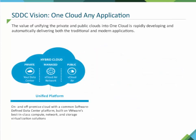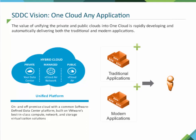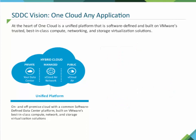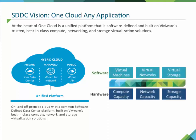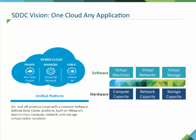The value of unifying your private and public clouds into one cloud is rapidly developing and automatically delivering both your traditional and modern applications. At the heart of one cloud — the secret sauce — is a unified platform that is software-defined and built on VMware's trusted best-in-class compute, networking, and storage virtualization solutions. This unified platform also offers intrinsic security: a zero-trust security model that is native to the data center infrastructure.